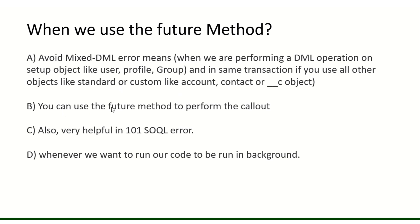The second use case: from a trigger we cannot send callouts, but if we use a future method we can perform callouts as well. Third, if you are hitting SOQL governor limit errors (101 queries), you can put code in a future method to reduce the query count — just make sure to optimize your queries too. Fourth, whenever you want any piece of code to run in the background, use the future method.